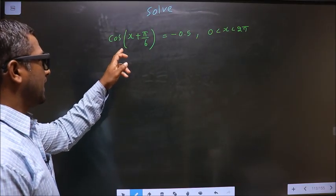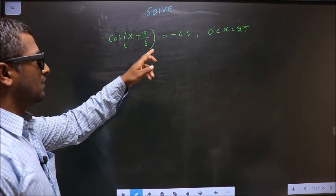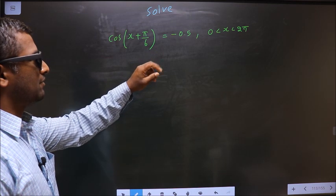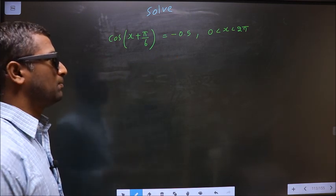Solve cos(x + π/6) = -0.5 where x lies in the interval 0 to 2π.